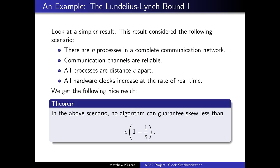To get the idea for this, let's look at a simpler broader result. This result considers the following scenario: there are n processes in a complete communication network, all communication channels are reliable, all processes are distance epsilon apart, and all hardware clocks increase at the rate of real-time. Then we get the following nice result, which says we can get a skew below epsilon times (1 - 1/n).